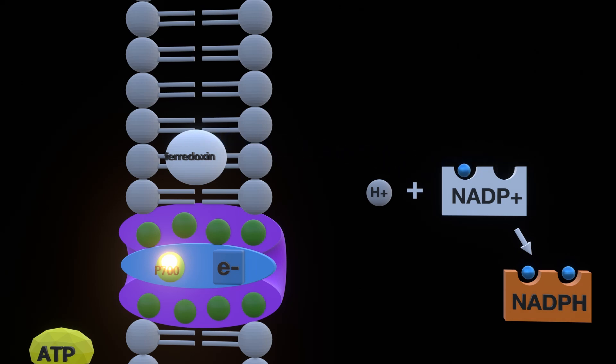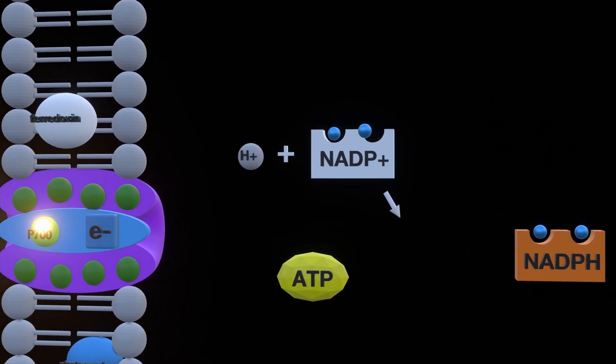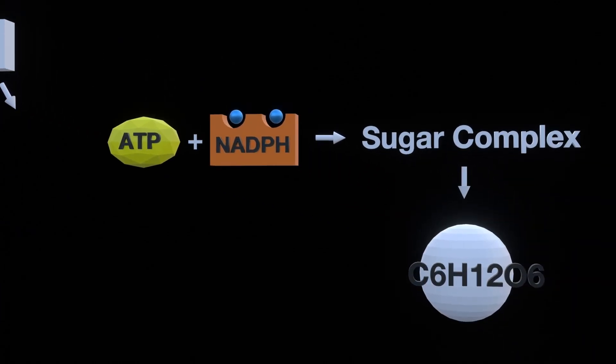Now essentially the process just repeats and at the end another electron comes out to complete NAD+ reductase, making it become NADPH. Lastly, NADPH and ATP produce a sugar molecule which then makes a glucose molecule.